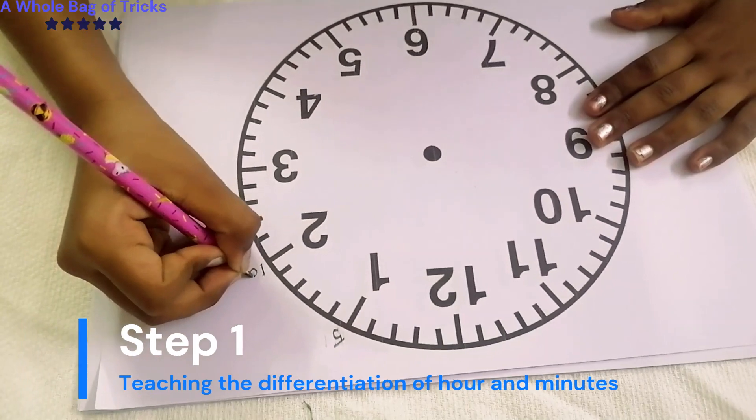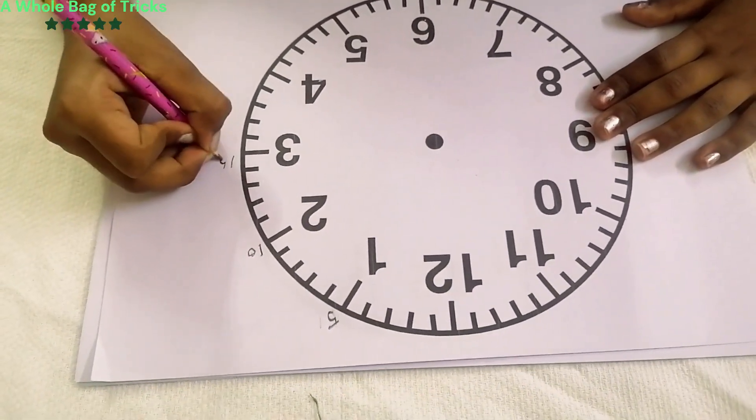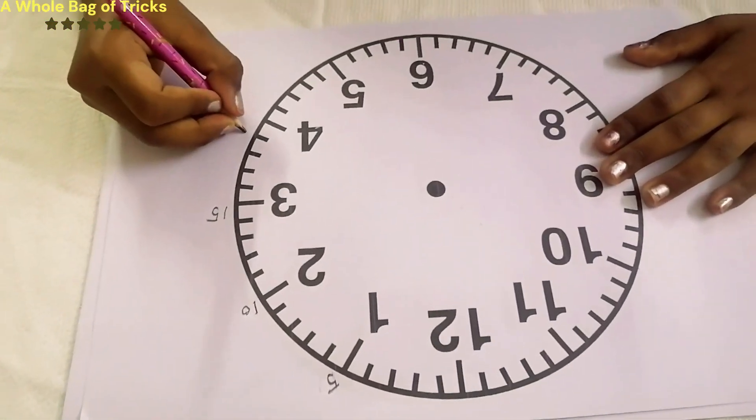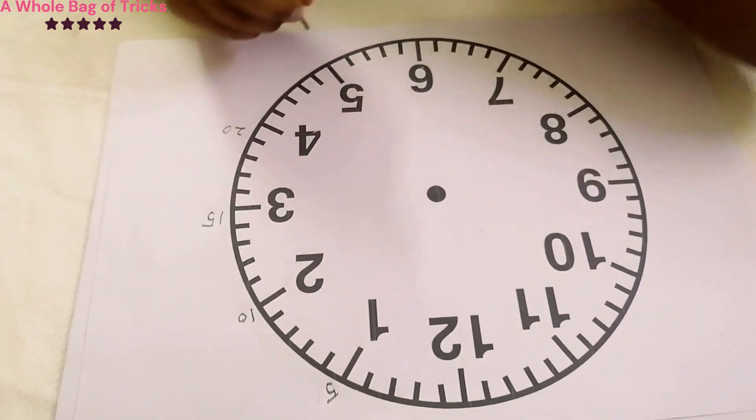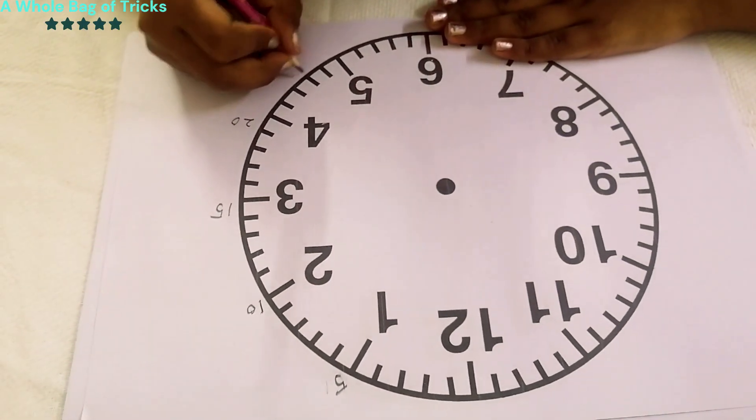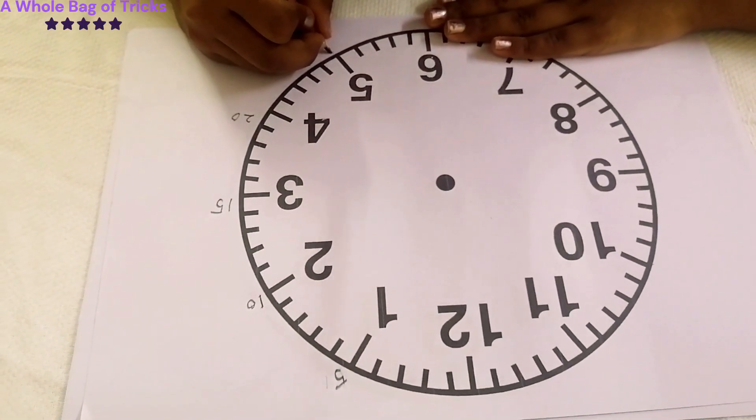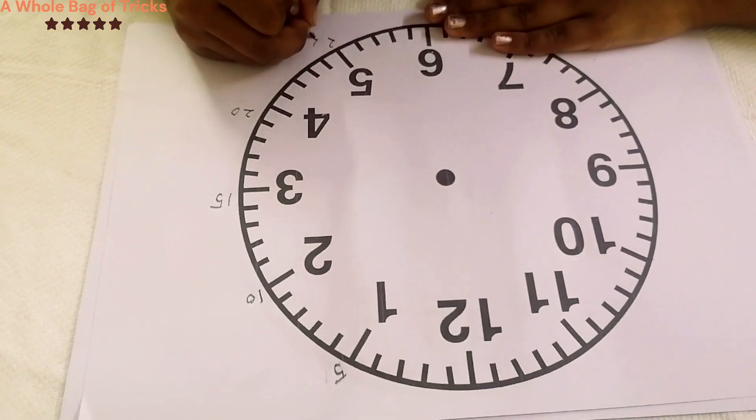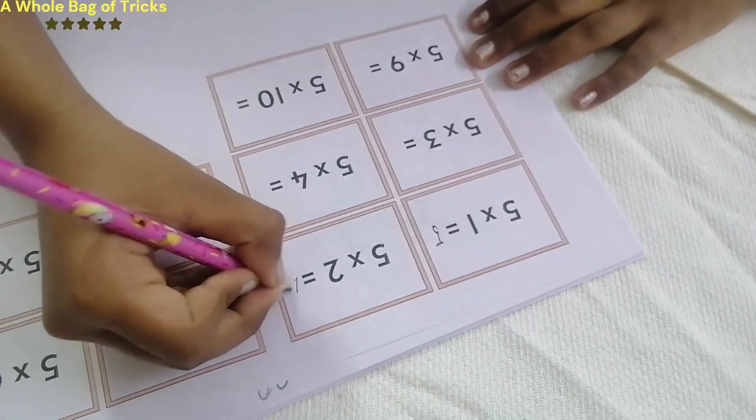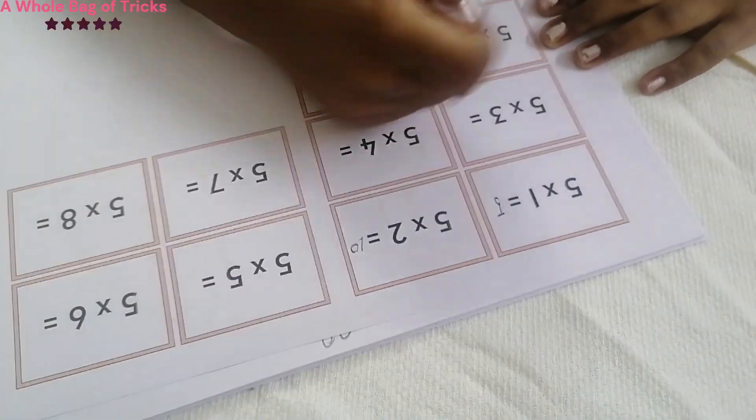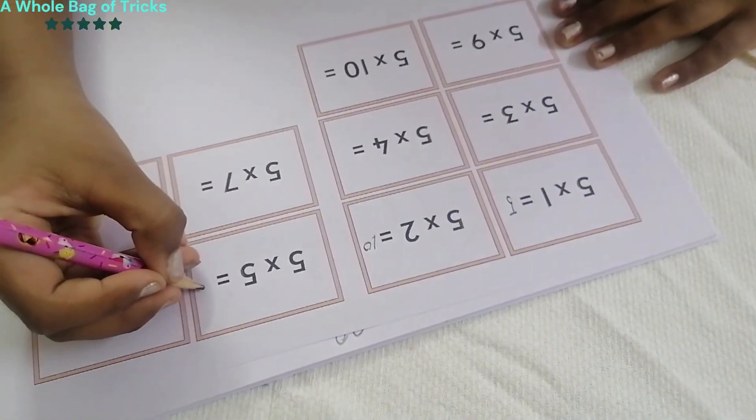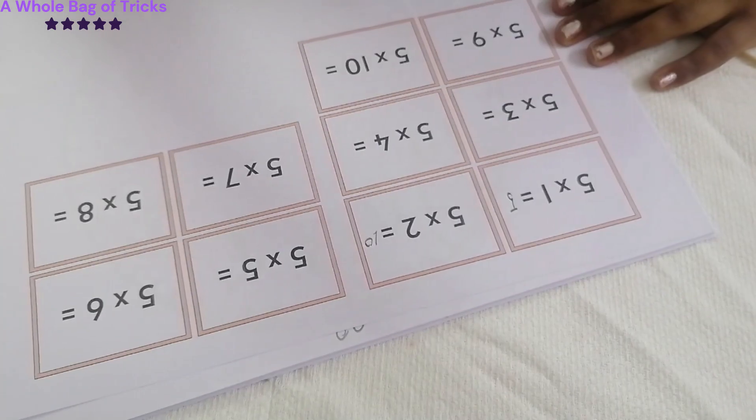First make the kid understand what each line and the numbers inside the clock's face represent. Each line means the minutes. The kid has to either use the fifth table or write down each number manually like 1, 2, 3, 4, 5. The best way is to teach them the fifth table so that 1 is 5, 2 is 10, 3 is 15 they can say it without even writing down.